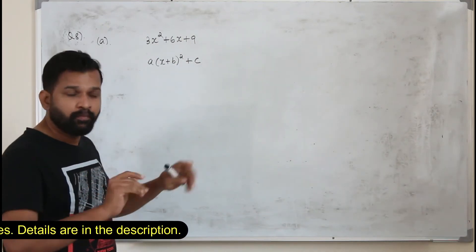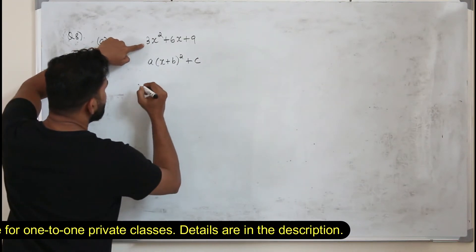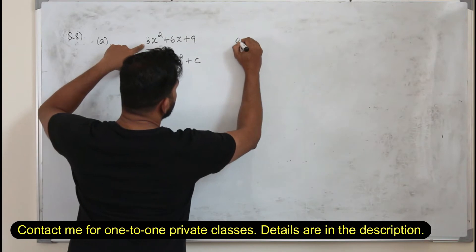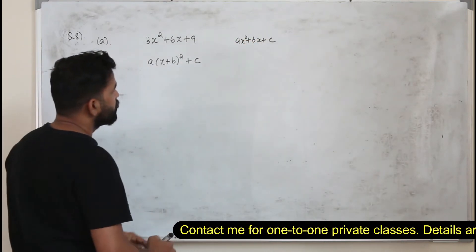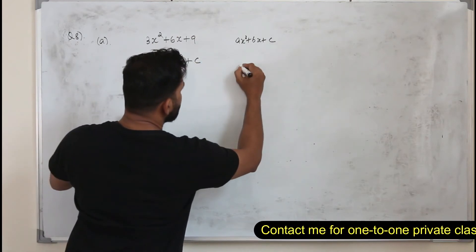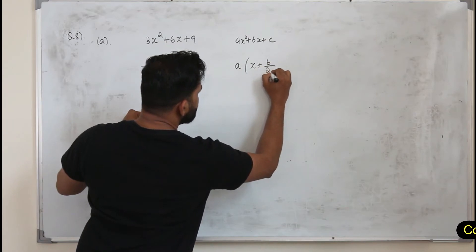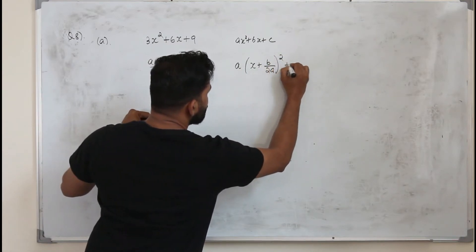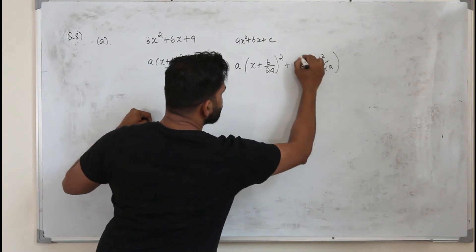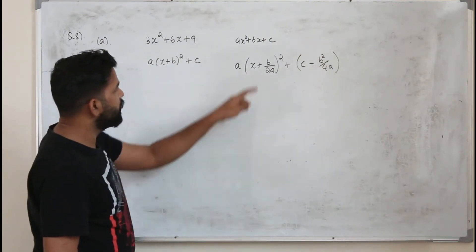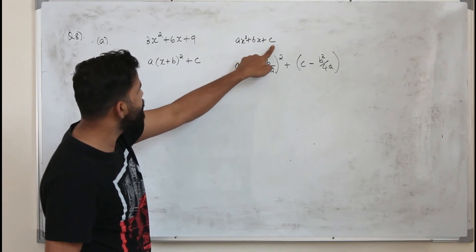Using the formula method: for ax squared plus bx plus c, you can write it directly as a times (x plus b over 2a) squared plus c minus b squared over 4a. Here a is the coefficient of x squared, b is the coefficient of x, and c is the constant. So a is 3, b is 6, and c is 9.